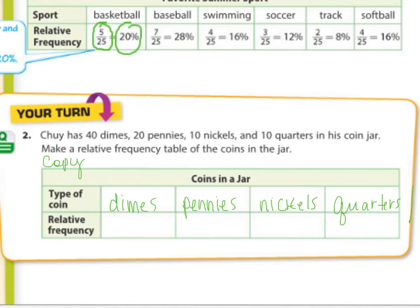Then my relative frequency. For dimes it's 40 out of what? I don't know the total, so I'm going to add them: 40, 60, 70, 80. You should be able to recognize these by now. 40 is half of 80, so that's 50 percent. How many pennies are there? That's 20 out of 80. When you simplify, you get two-eighths, which is equal to one-fourth, which is 25 percent.